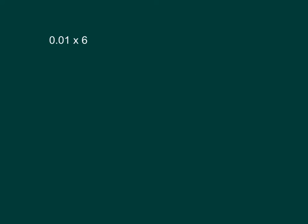Here we have 0.01 times six, or one-hundredth times six. Write this as a fraction and solve. That's one-hundredth times six equaling six-hundredths, written as a decimal: 0.06. One-hundredth times six is equal to six-hundredths.